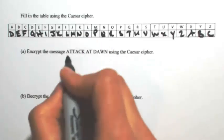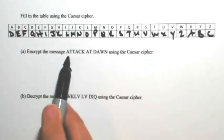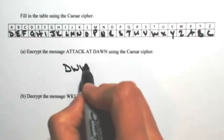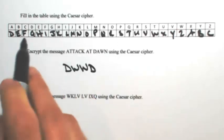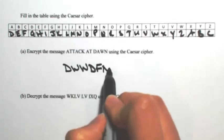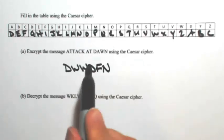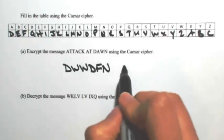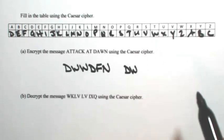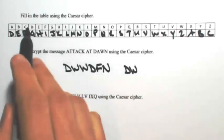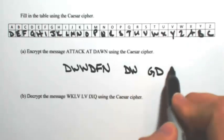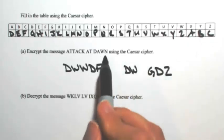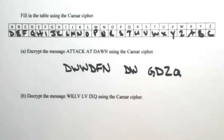So an A would become a D, the T would become a W, the A is a D again, C is an F, K is an N. Next word, A is a D, T is a W, D is a G, A is a D, W becomes a Z, and N is a Q. So that's how we encrypt the message.